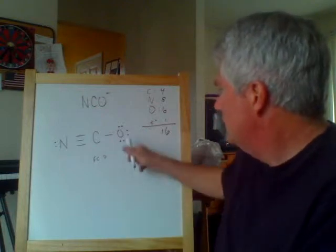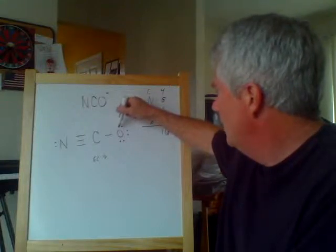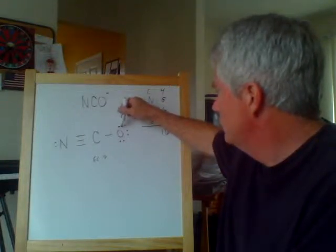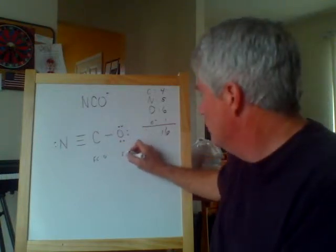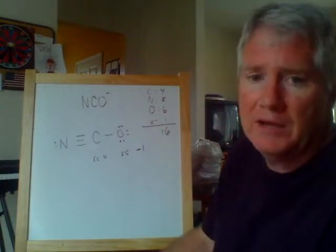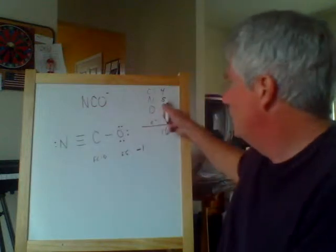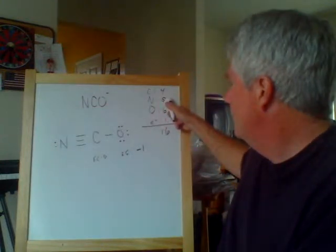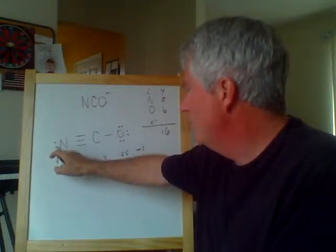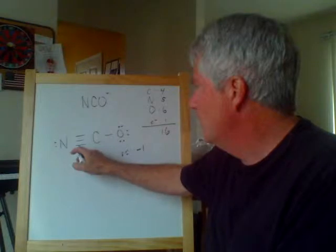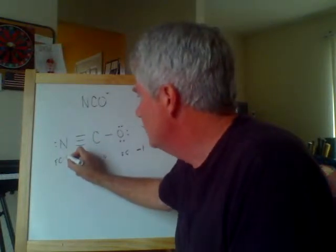Let's look at oxygen. Oxygen has six valence electrons, but in this depiction it is contributing each of the lone pairs — that's two, four, six — plus half of the bonding pair, for a total of seven. So the formal charge in this case is minus one on the oxygen. Now let's look at nitrogen. Nitrogen contributes five valence electrons. We add up the electrons here: two for its lone pair and then one each for the bonding pairs — that's five. It matches exactly. So the formal charge on this nitrogen is zero.